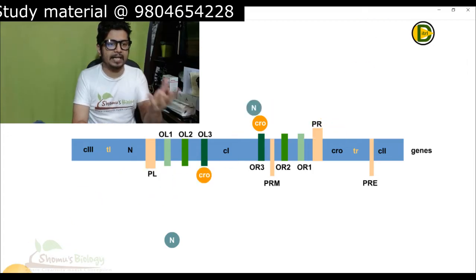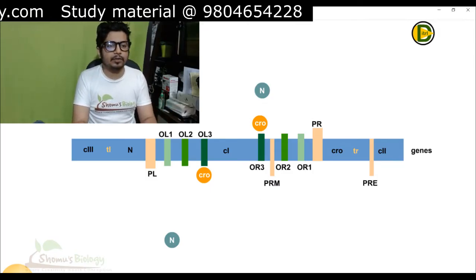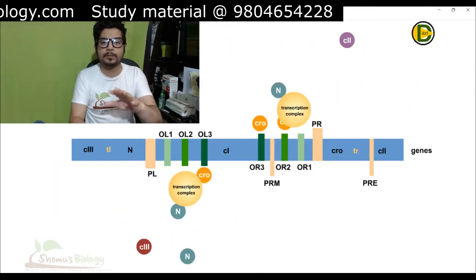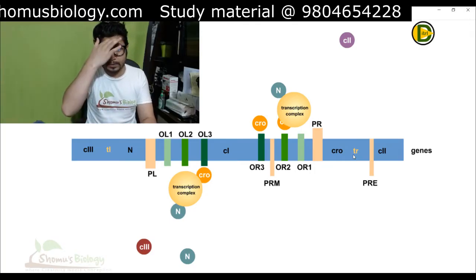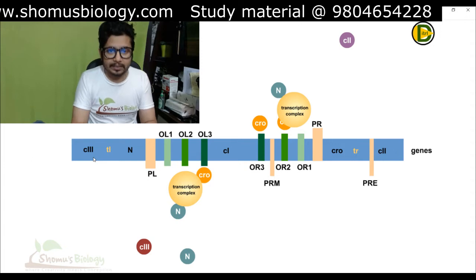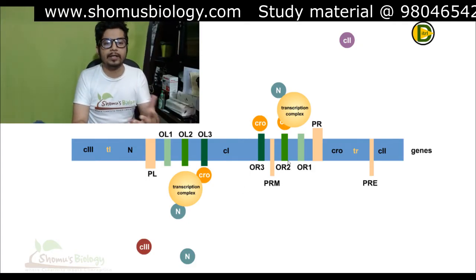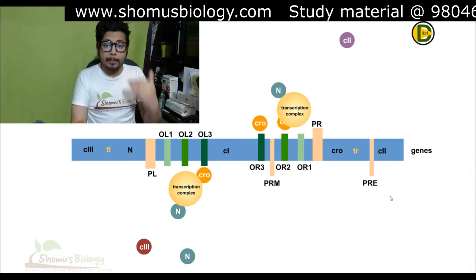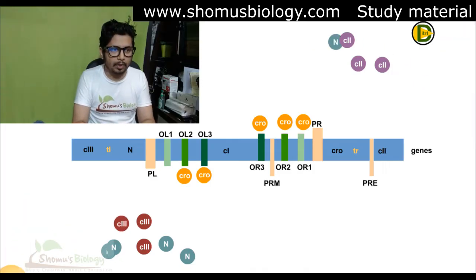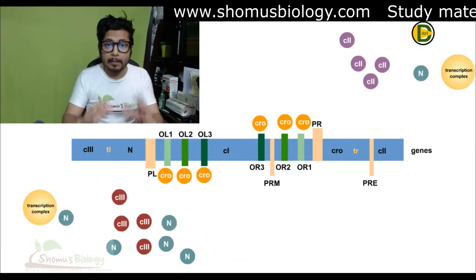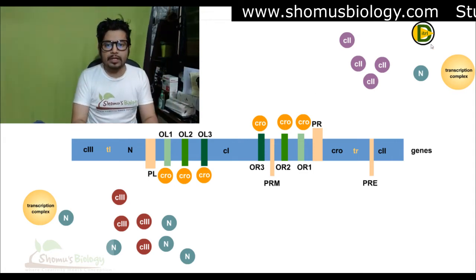In the very first situation, both the left and right operators are being transcribed, producing more CRO and more N protein. As N protein is made, since it is an anti-terminator, the transcription complex moves beyond the termination sites TL and TR, and starts making C2 and C3. Meanwhile, CRO is being made from the start of transcription and begins binding to operators OL1, OL2, OL3, OR1, OR2, OR3. N then allows continued production of C2 and C3 protein.